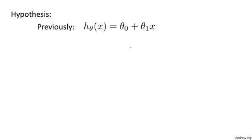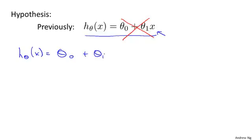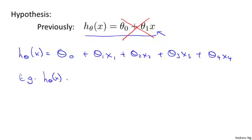Now that we have multiple features, let's talk about what the form of our hypothesis should be. Previously, this was the form of our hypothesis where x was our single feature. But now that we have multiple features, we aren't going to use this simple representation anymore. Instead, our form of the hypothesis in linear regression is going to be theta 0 plus theta 1 x1 plus theta 2 x2 plus theta 3 x3 plus theta 4 x4. And if we have n features, then rather than summing up over our four features, we would have a sum over our n features.